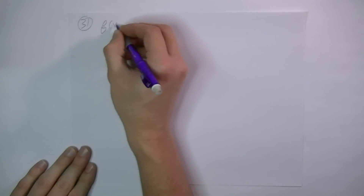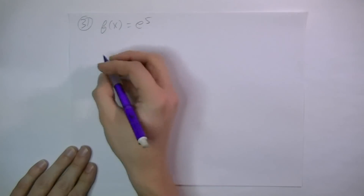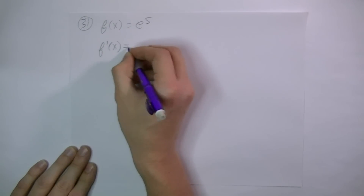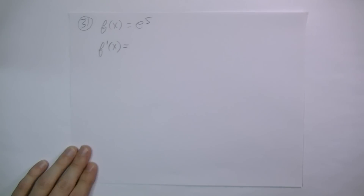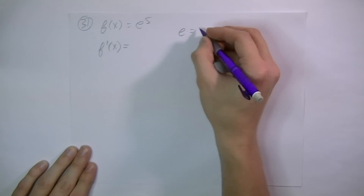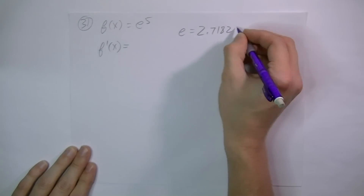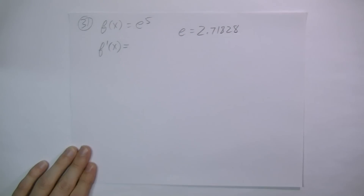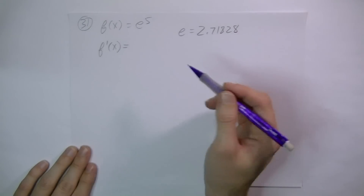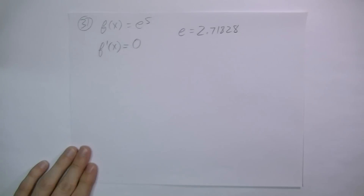If f of x equals e to the fifth, find f prime of x. We need to find the derivative. Well, e is a mathematical constant, which is 2.71828. Therefore, e raised to the fifth power is also a constant, and the derivative of a constant will be zero.